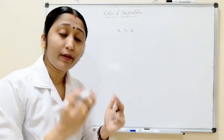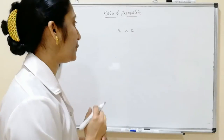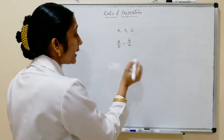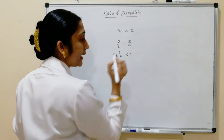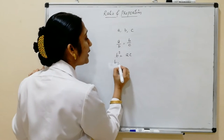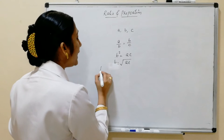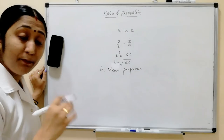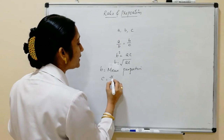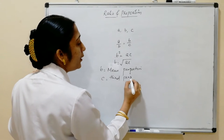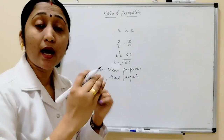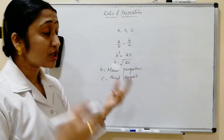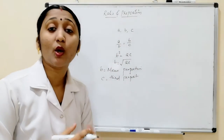If A, B, C are in continuous proportion, we can write it as A/B = B/C, which gives B² = AC, and therefore B = √(AC). Here B is called the mean proportion and C is called the third proportion.